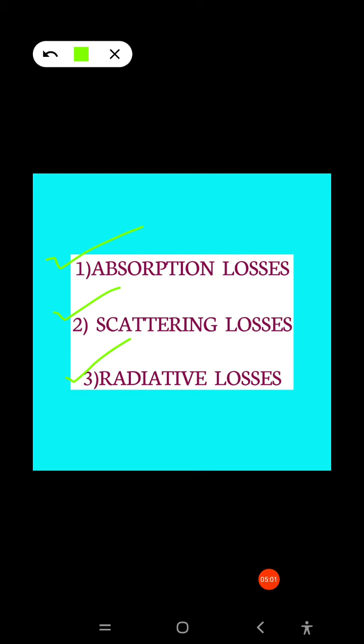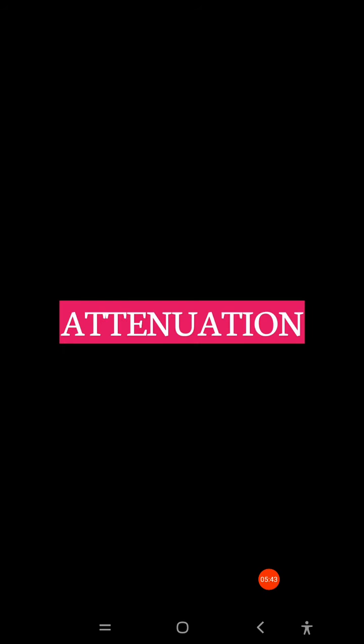Radiative losses are also called bending losses, and these losses occur due to microscopic and macroscopic bending of the fiber geometry. So the three types of attenuation losses are: absorption losses, scattering losses, and radiative losses.